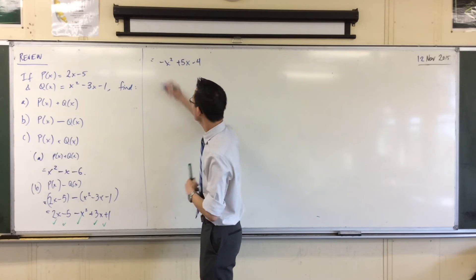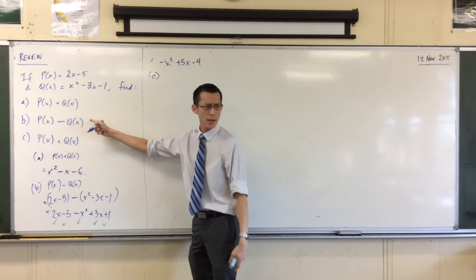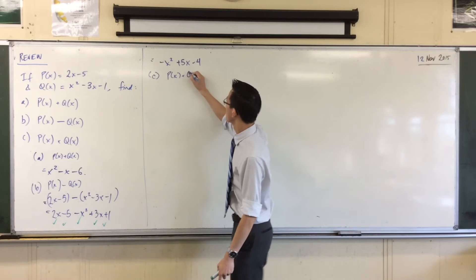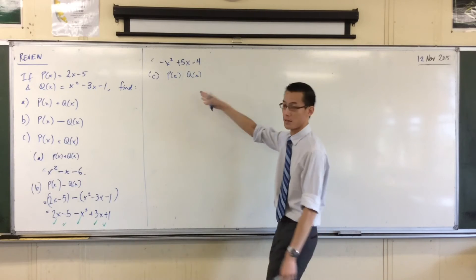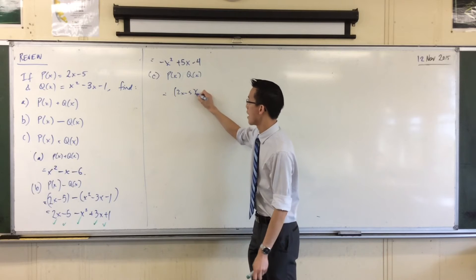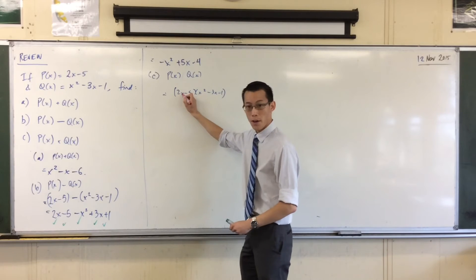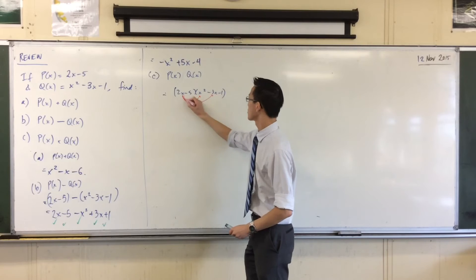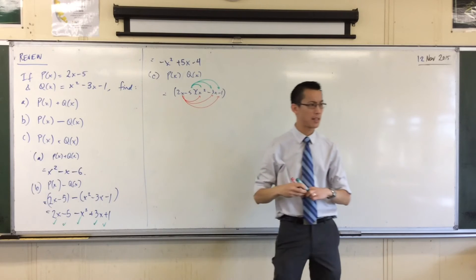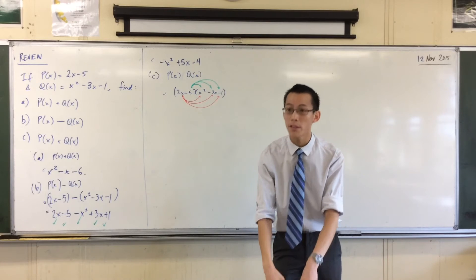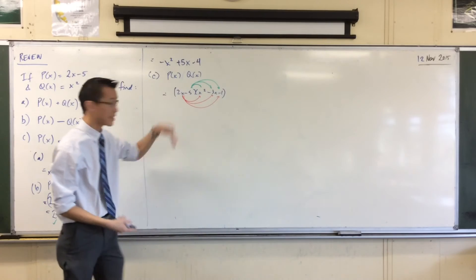Last one — let's do the multiplication. I'm going to write the actual substitution: P of X times Q of X. You'll sometimes see it without the multiplication symbol between them, just like 3X means 3 times X. So P of X times Q of X is 2X minus 5, times X squared minus 3X minus 1. I want to do the first term times each of these, then the second term times all of these. By my arrows, I'm expecting 6 terms — some should collect, so in the end I won't have 6 terms, but I'll start my next line with 6.